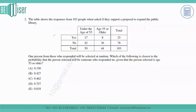Hello students. The table shows the response of 103 people when asked to expand the public library. This is under the age of 55, and this is age 55 or older. These are the total number of people who said yes about expansion, said no about expansion, and the total people were 103.